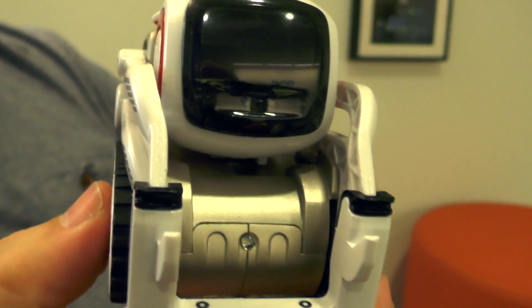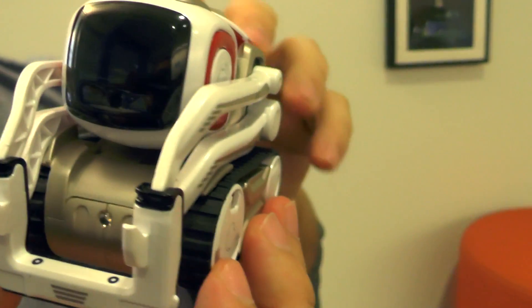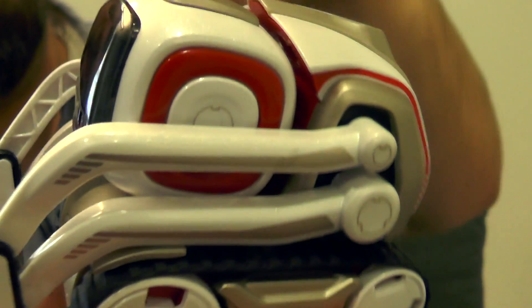What we were trying to do with Cosmo is get that same personality into a real physical form factor. The fact that Cosmo looked around, recognized you, and then said your name—those are the kind of things we had to build in to make him feel like a real character.